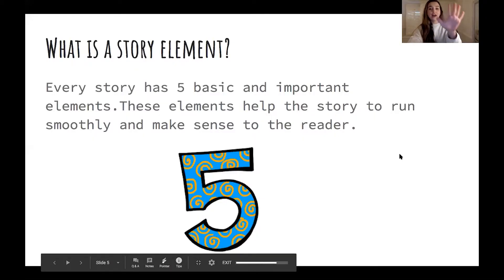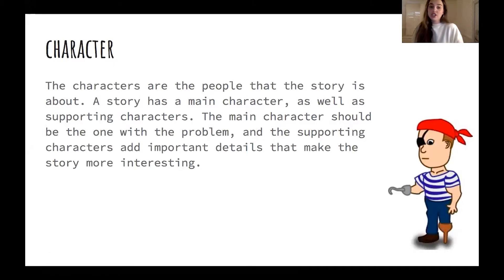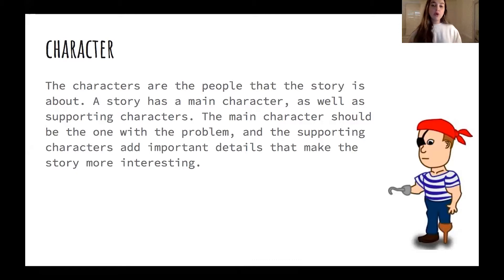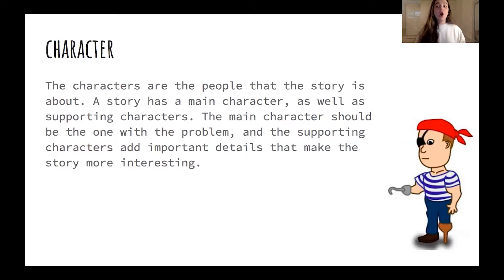There are five story elements. The first is character, or characters. In some books there may only be one character, but characters are the people that the story is about. The story should have a main character as well as some supporting characters. The main character should be the one with the problem, and the supporting characters add important details that make the story more interesting. You can usually pretty quickly identify who the main character is — who is the book really about?